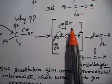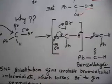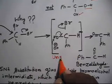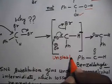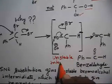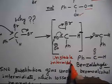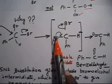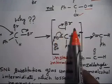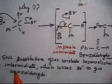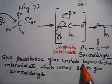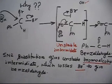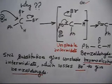This intermediate — a bromo alcohol with both bromine and OH on the same carbon — is an unstable intermediate. Because it is unstable, the negative charge pushes bromine out and forms benzaldehyde. So SN2 substitution gives an unstable bromo alcohol intermediate, which loses Br minus easily to give benzaldehyde.